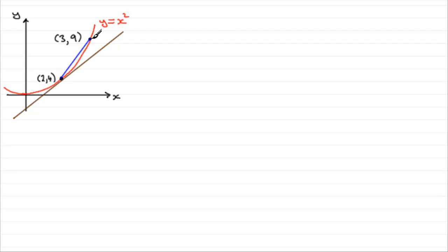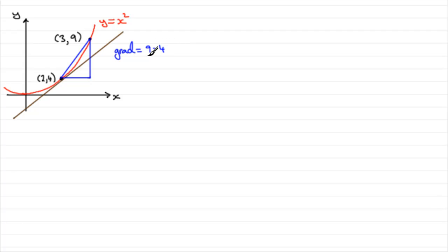You'll see why we work out the gradient of chords as we progress through this tutorial. To get the gradient of the chord, I need to do the difference in the y values divided by the difference in the x values. That gradient will be equal to 9 take away 4, divided by 3 take away 2. So we get 5 over 1, which is 5. The gradient of our chord is 5 — clearly a lot steeper than the gradient of the tangent.